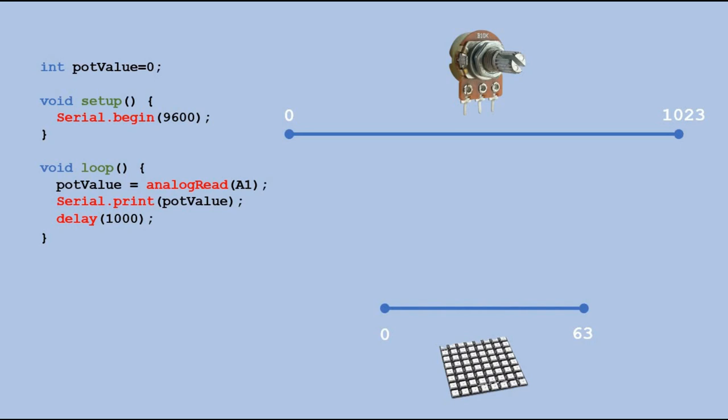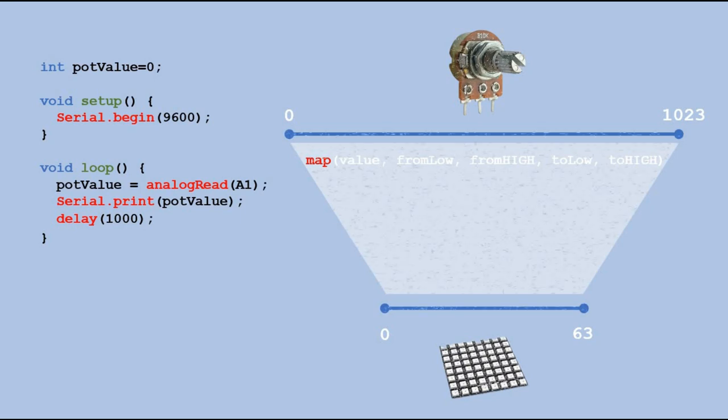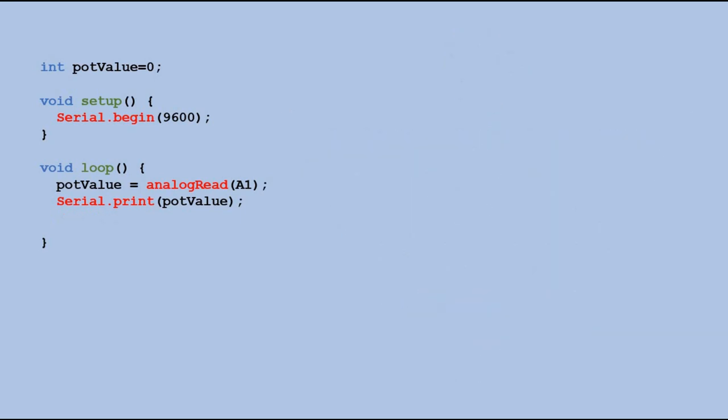We can translate the reading into the desired range using map function. You need to provide the value you want to map and the min and max values of the original range and target range.